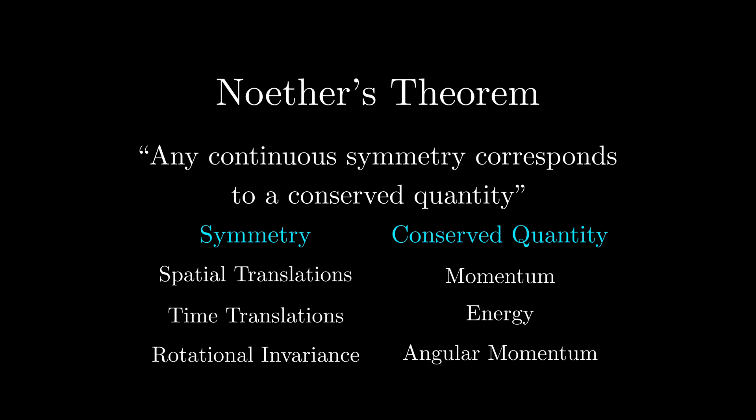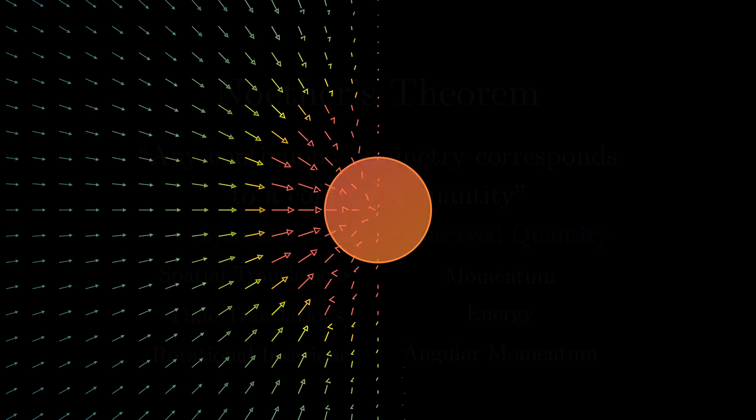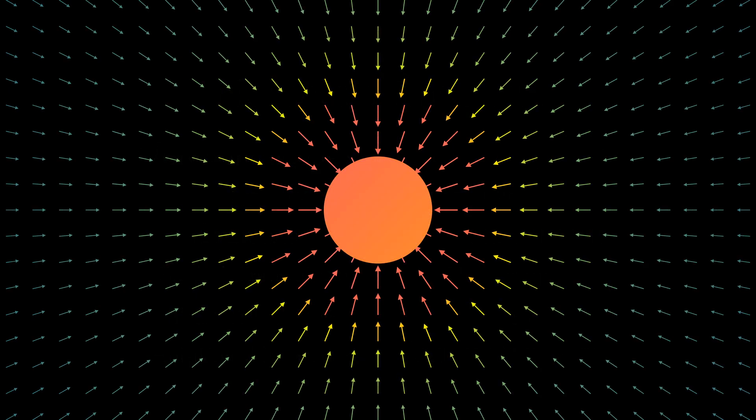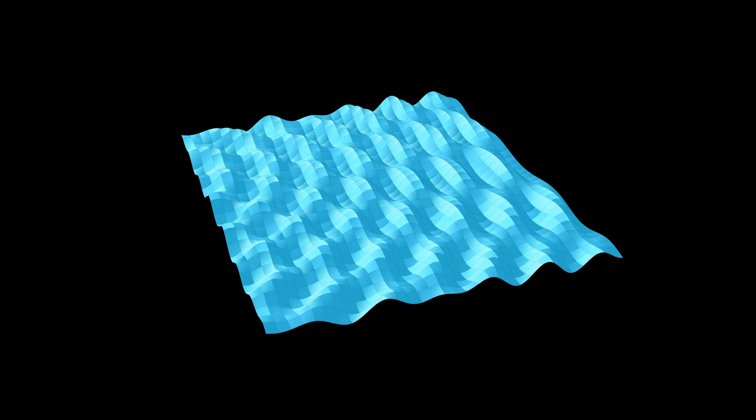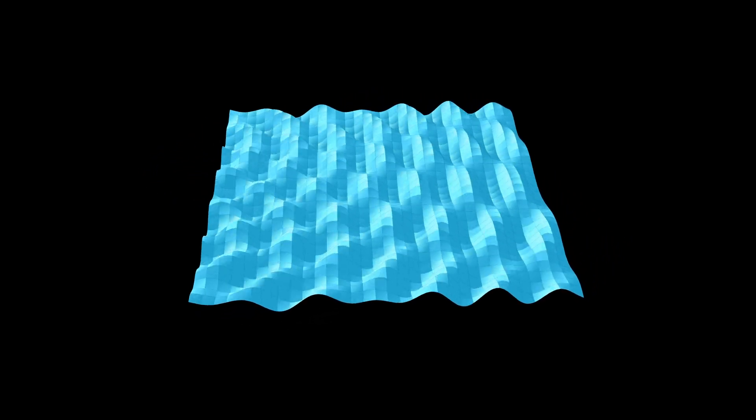Another conserved quantity you might have encountered is angular momentum, which occurs in systems that are symmetric under rotational invariance, like the gravitational field of a star or black hole. Admittedly, these are just a few simple examples, but this line of thinking permeates almost all of modern theoretical physics.